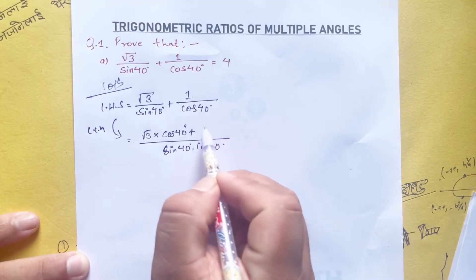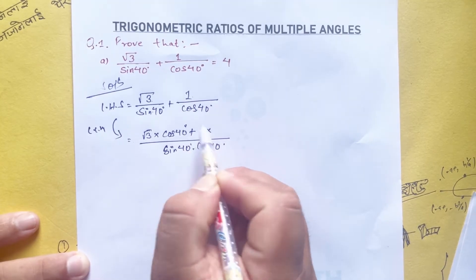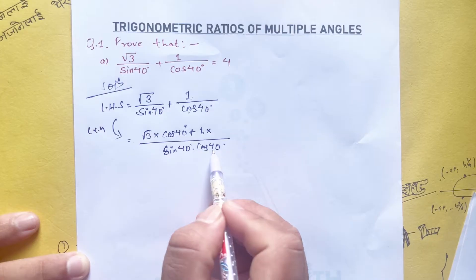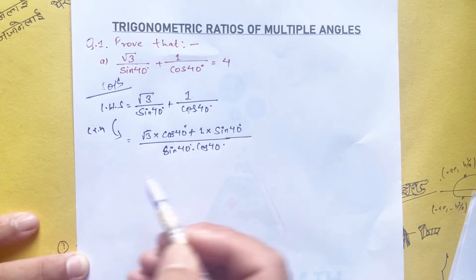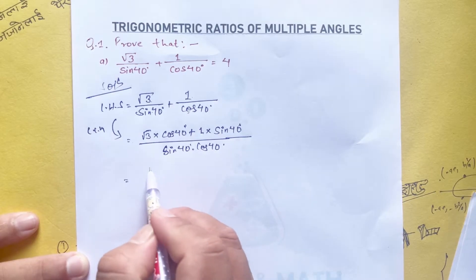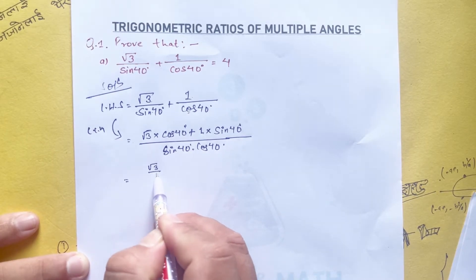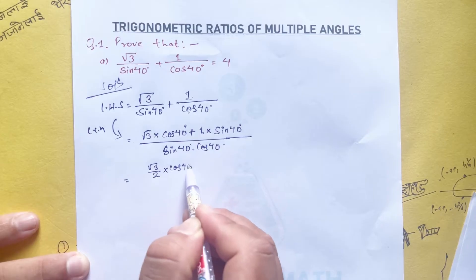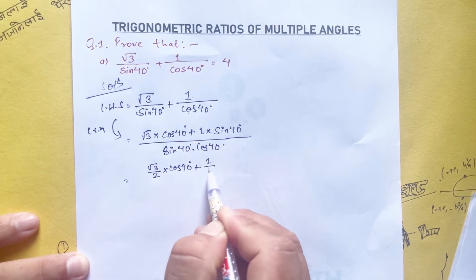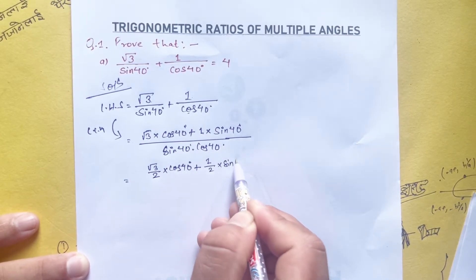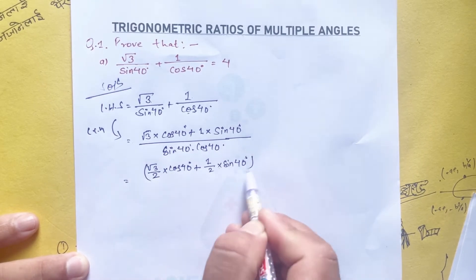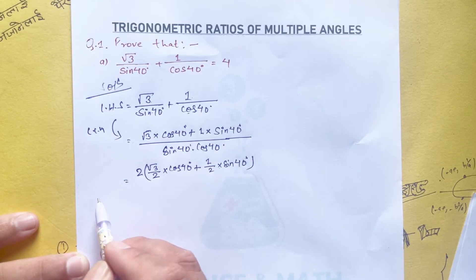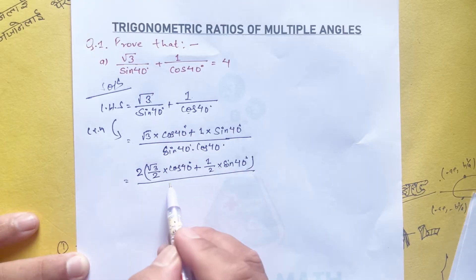The numerator becomes √3 cos 40 plus 1 into sin 40, giving us (√3 cos 40 + sin 40) over sin 40 cos 40. Factoring out 2 from the numerator, we get 2 times (√3/2 cos 40 + 1/2 sin 40) divided by sin 40 cos 40.